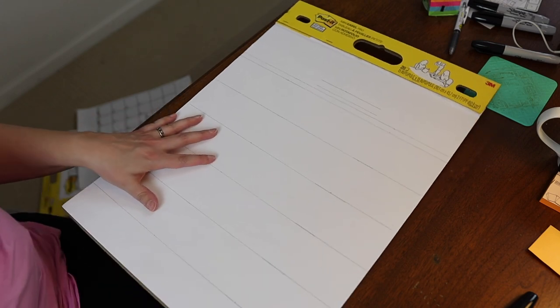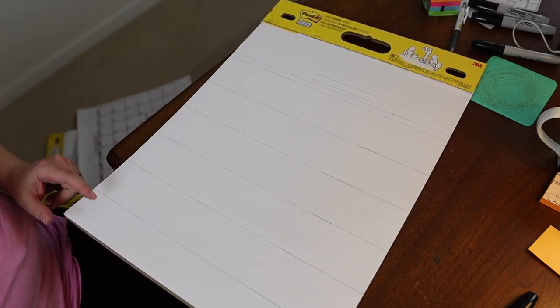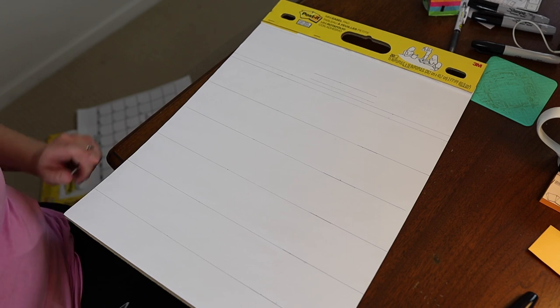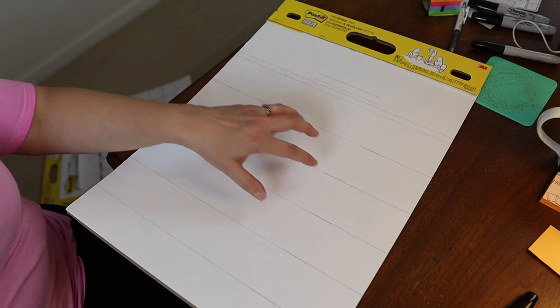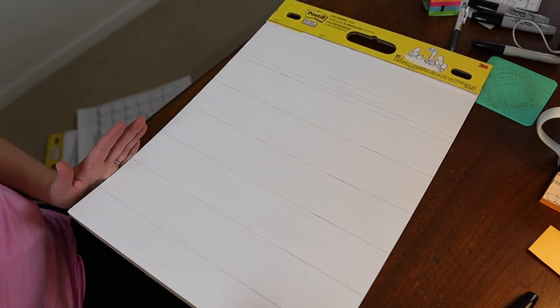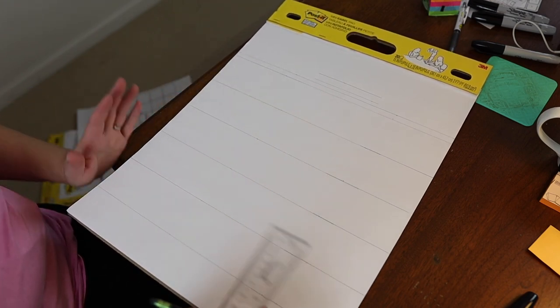All right, so we have our horizontal rows: one, two, three, four, five, plus a little extra space at the bottom. Now to go across, we want them to be two and an eighth wide.